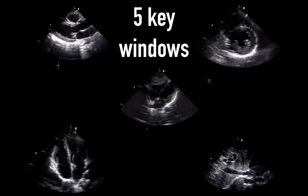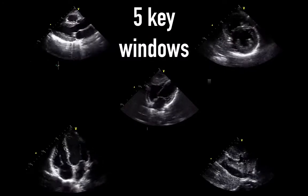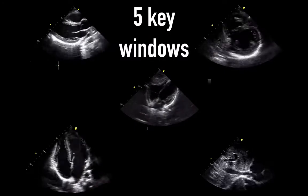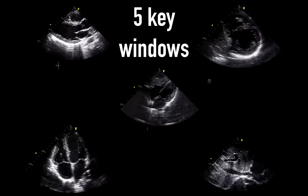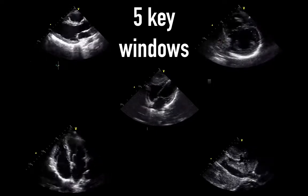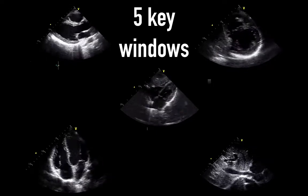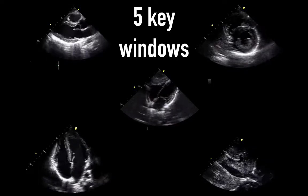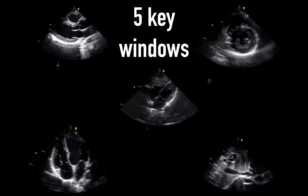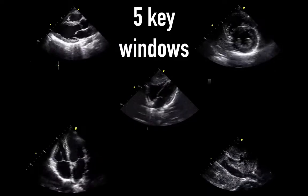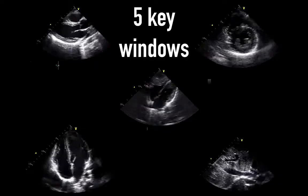To do this, we will use our five key windows, as we've highlighted before. With these key windows, we can begin to have a more mechanistic view of shock and respiratory failure. At the bedside, you can gain new insights into the exact mechanism and more quickly institute therapy or further consultation and imaging.